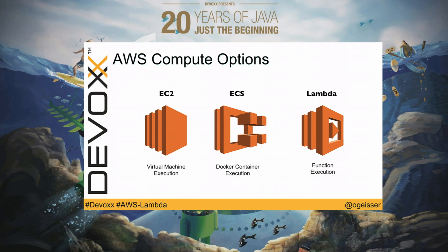AWS Lambda is one of three compute options of the AWS cloud service. The most popular and oldest one is EC2, which gives you virtual machines. You have ECS, the EC2 container service, which gives you Docker container execution. And then we have the Lambda platform, which gives you function execution. The difference between the first two and Lambda is that with EC2 and ECS you have a complete virtual machine or container, while in Lambda you have a managed execution environment.